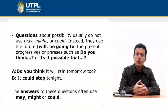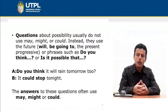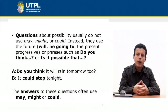Questions about possibility usually do not use may, might, or could. Instead, they use the future — will, be going to, or the present progressive — or phrases such as 'do you think' or 'is it possible that?' For example: 'Do you think that it will rain tomorrow too?' In the answers, I can use the modal: 'It could stop tonight.' So the answers to these questions often use may, might, or could. In summary, you don't usually use may, might, or could for questions — it is better to use them in answers.